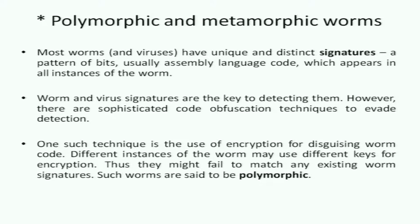The signature could also be JavaScript or PHP. Such a pattern of bits appears in all instances of the worm. Worm and virus signatures are the key to detecting them. However, there are sophisticated code obfuscation techniques to evade detection. One such technique is using encryption to disguise worm code. Different instances of the worm may use different keys for encryption, causing them to fail to match any existing worm signature. Such worms are said to be polymorphic.